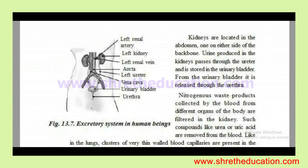The excretory structure includes the right kidney and left kidney connected by ureters to the urinary bladder, and the urethra. The kidneys are located in the abdomen on either side of the backbone.